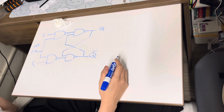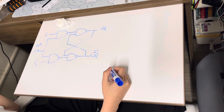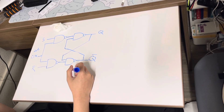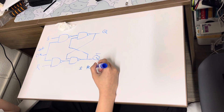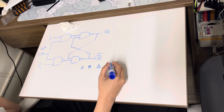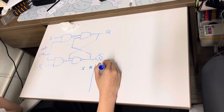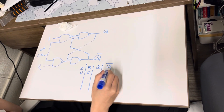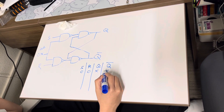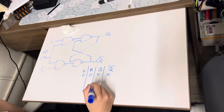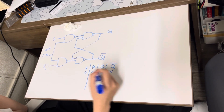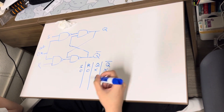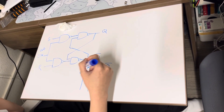Looking at this circuit, we know that it is an SR NAND gate latch. For the SR latch, we have the truth table shown below. When S and R are both 0, it is going to be indeterminate, because when you have S at 0 and R at 0, after the NAND gate it's going to be 1, and you cannot have Q equal to 1 and Q-not also equal to 1. That is why it is indeterminate.